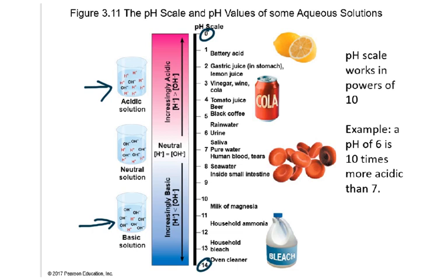When looking at the pH scale, anything less than 7 is considered acidic. Anything greater than 7 — so a pH of 7.1 or higher — is considered basic. A neutral solution, by definition, has the exact same concentration of hydronium and hydroxide ions, so that solution would have a pH of exactly 7.